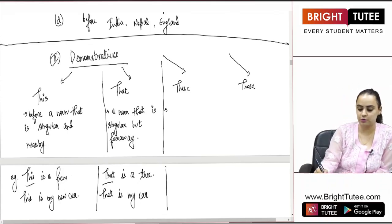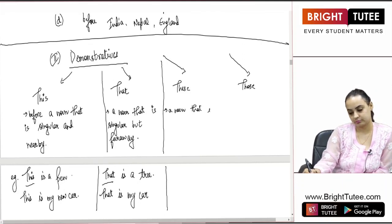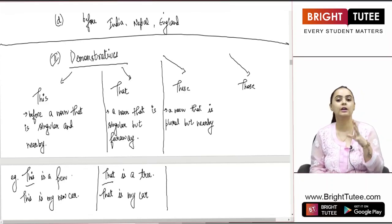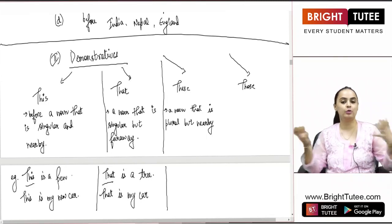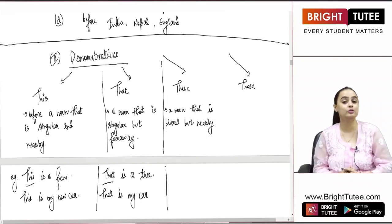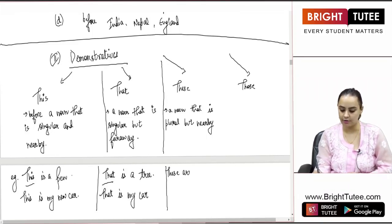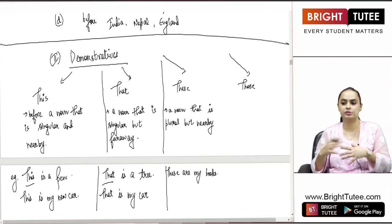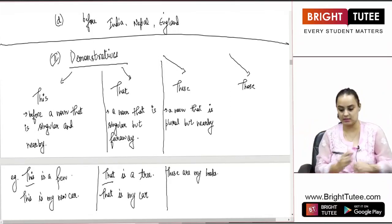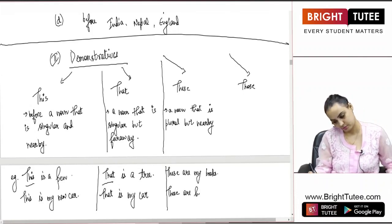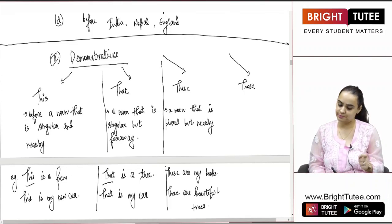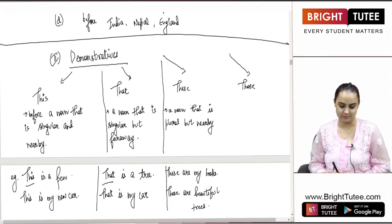THESE is used before a noun that is plural but nearby. Something which is near to you but plural in number. For example, if you have books around you while studying: 'These are my books.' Or imagine being in a garden surrounded by beautiful flowers and trees: 'These are beautiful trees.' Something plural and near to you — use THESE.